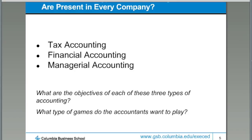Each of these three types has a very different objective. The objective of tax accounting is to minimize your overall income tax burden. Accounting ends up being a set of rules and regulations, and the accountant is trying to apply those rules and regulations in such a way that they make the income of the company look as small as possible, so that the tax bill is as small as possible.